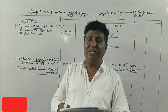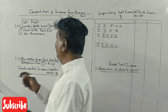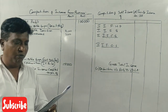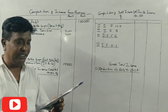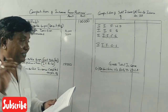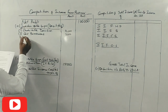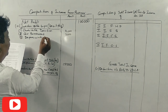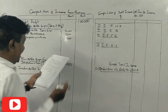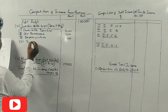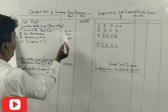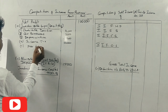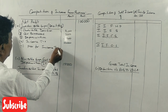Now let's come to the debit side of the profit and loss account. Net profit is taken first. Salary, bonus, postage, stationery are all business expenses. Depreciation as per IT rules for the car is admissible. Income tax of 50,000 and provision for income tax are inadmissible.